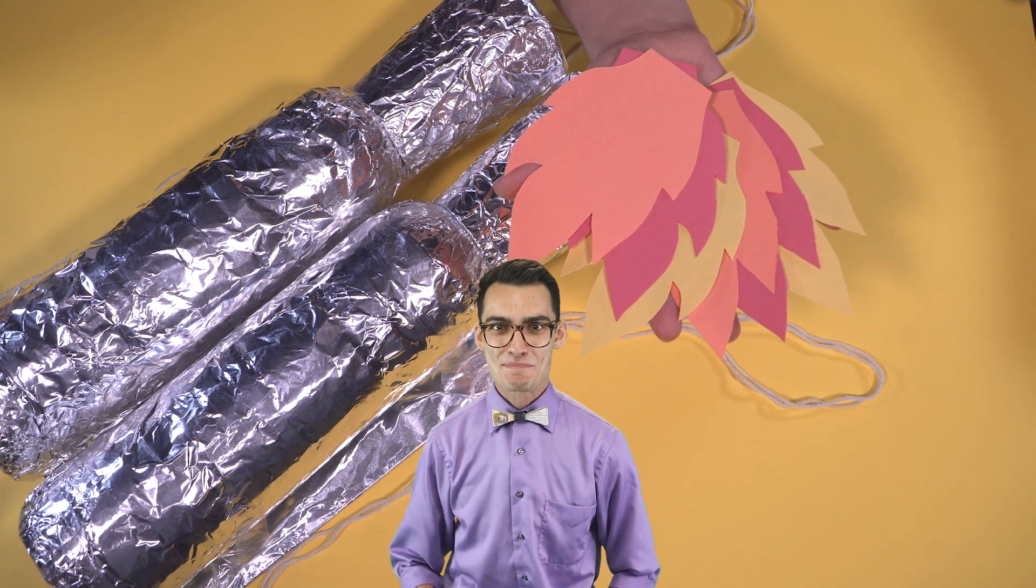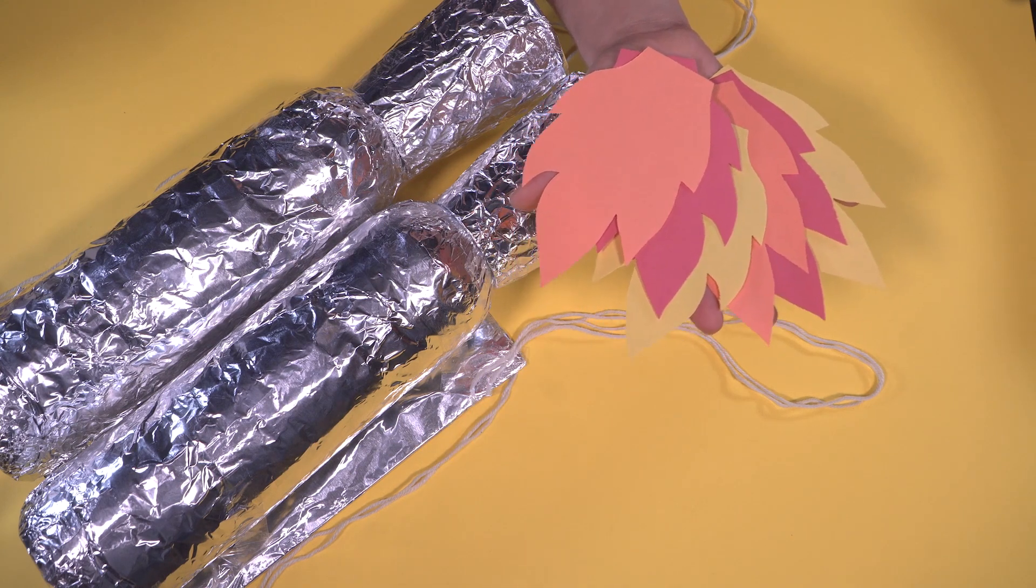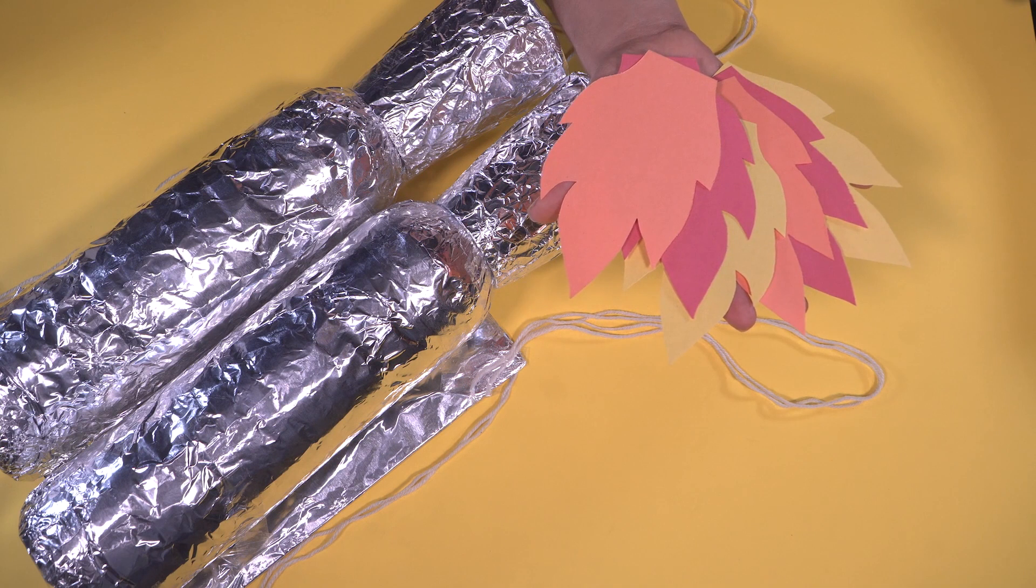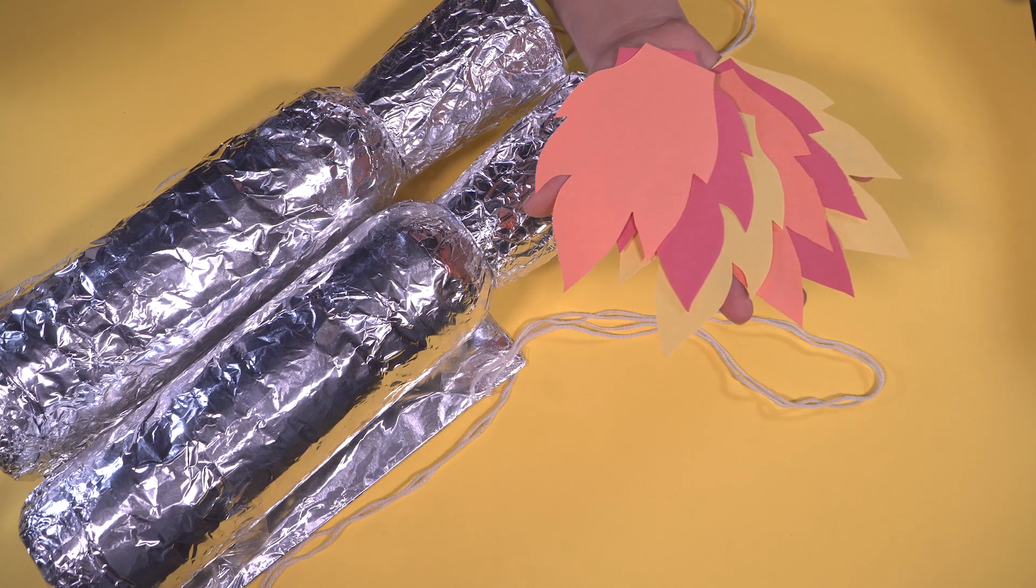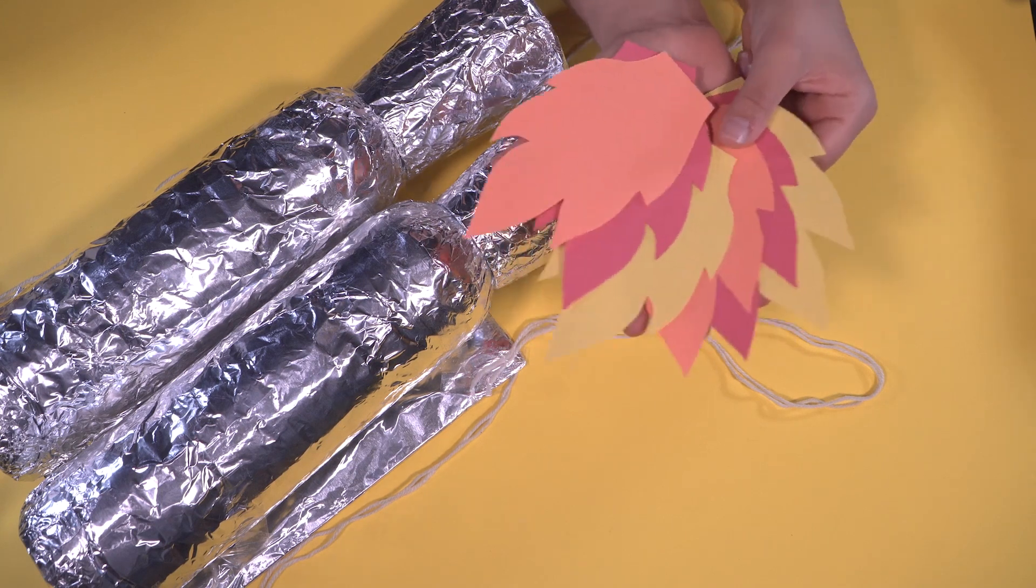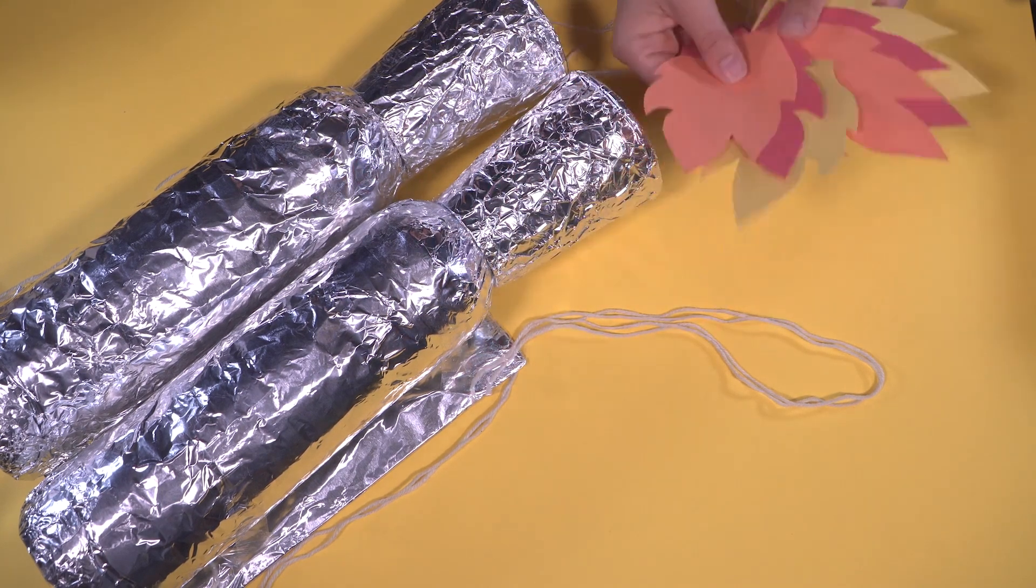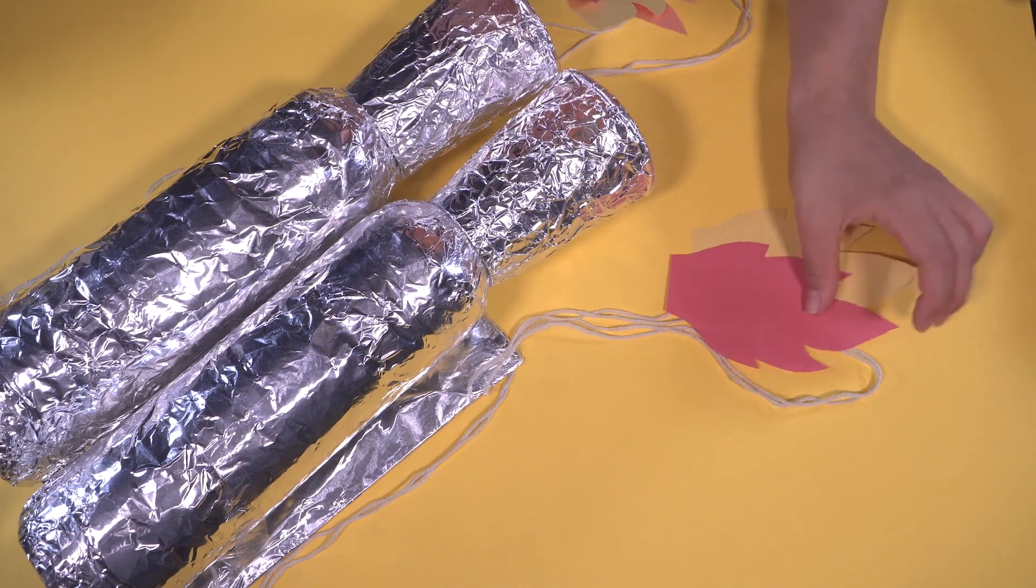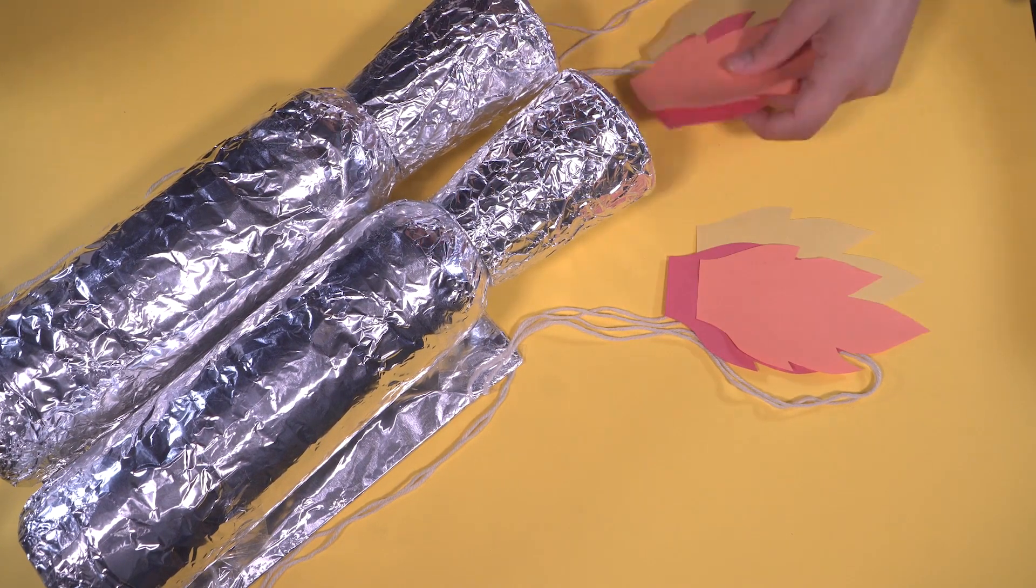Before we can blast off, we've got to make it super! It's time to let your creativity run wild. Using your red, yellow and orange construction paper, you can cut out some shapes that look like flames or strips and stick them to the inside of the cups so that your jetpack looks alive.